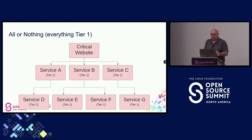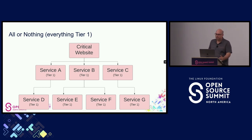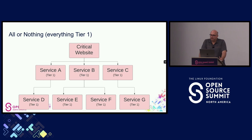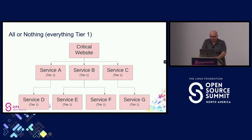The problem is with tier one services, there's typically a higher HA and DR requirement and also lower operational metric targets — like mean time to recovery, stricter data recovery objectives like RPO and RTO — which makes declaring everything tier one very expensive, as well as not very realistic.